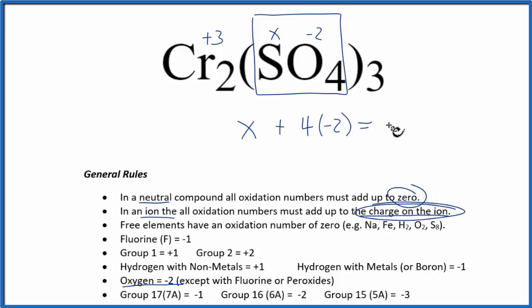We said the sulfate ion is minus two. So we have X minus eight equals minus two. We add eight to both sides. X equals a positive six. So the oxidation number on the sulfur here is plus six.